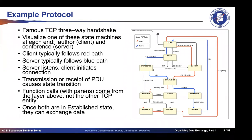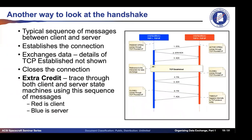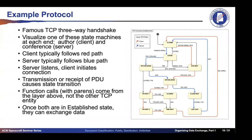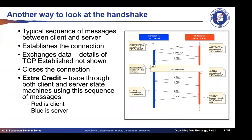Think of the state machine as a constraint on the communication between the two TCP protocol entities. In SysML, this would be a sequence diagram. It takes three messages to establish the connection, then you exchange whatever data you're going to exchange, and then four messages to close out the connection. For extra credit, you can trace through this sequence of messages on the state machine diagram to verify it all works out correctly.